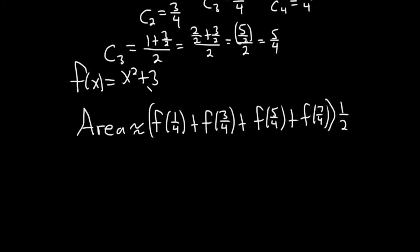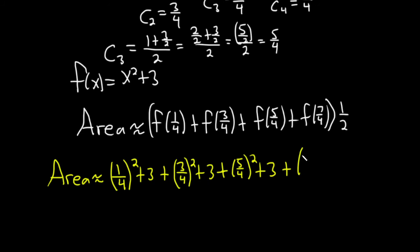And so x squared plus three is our f of x. So the area, let me switch colors here, is going to be, let's see, one fourth squared plus three. That's going to be the first function value we're going to look at. Plus three fourths squared plus three. Plus plugging in five fourths, we'll get five fourths squared plus three. And then seven fourths squared plus three. And all of this is being multiplied by one half.